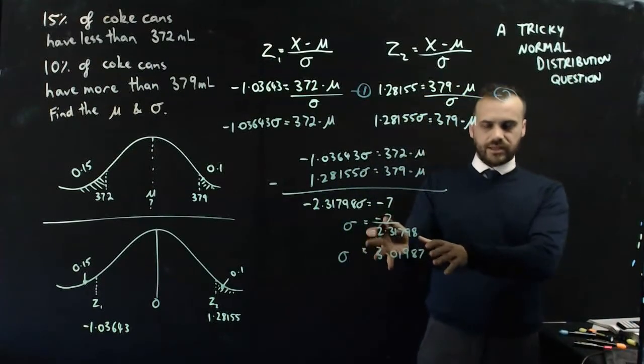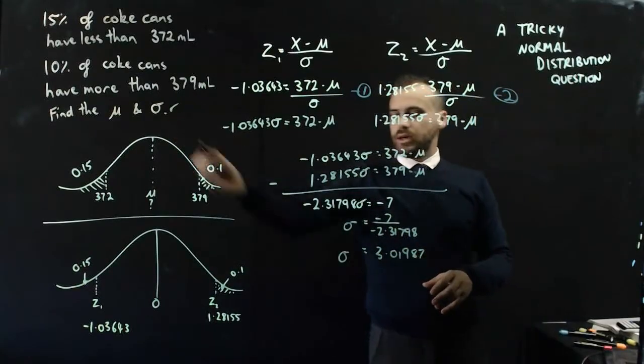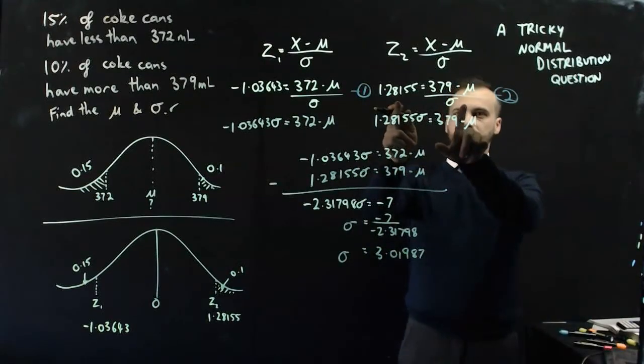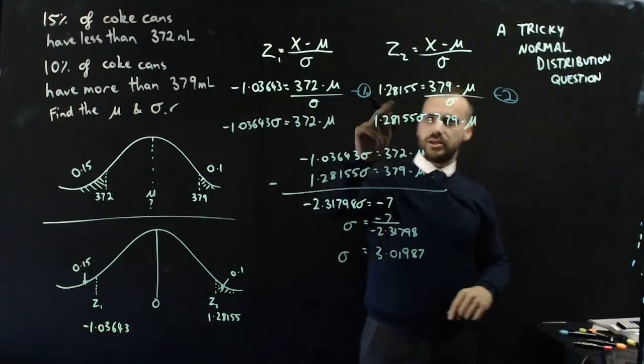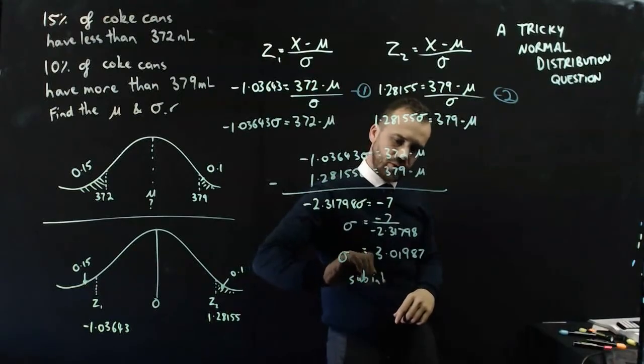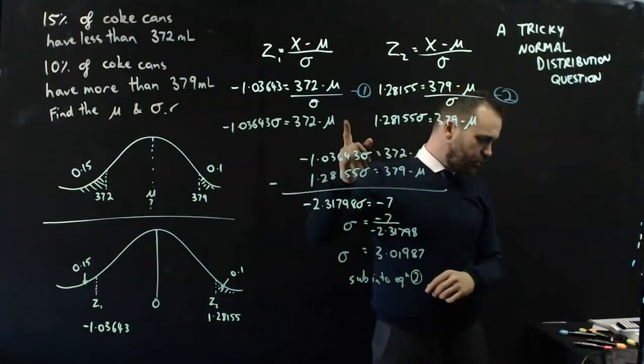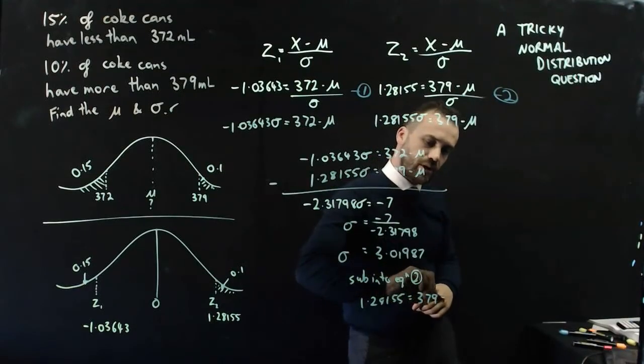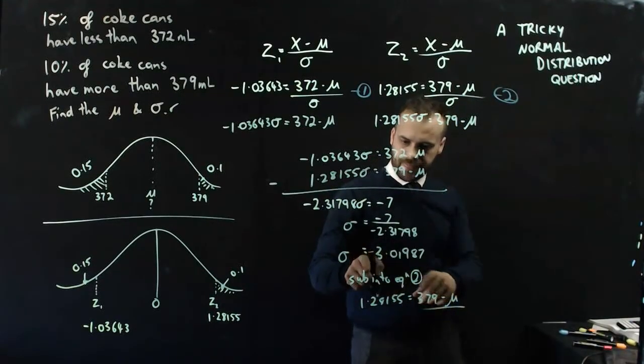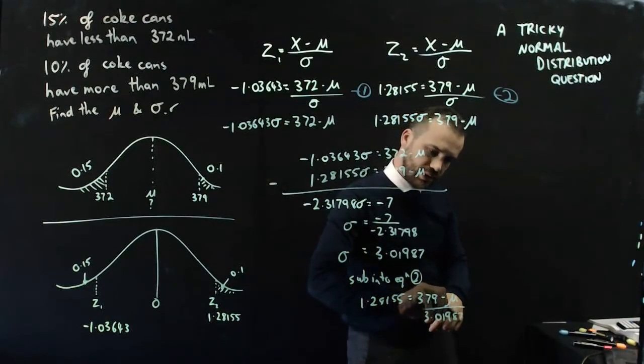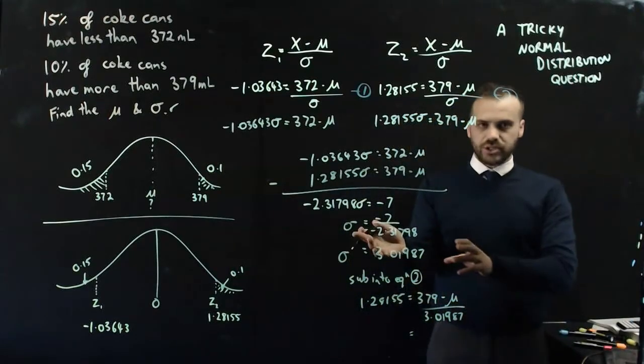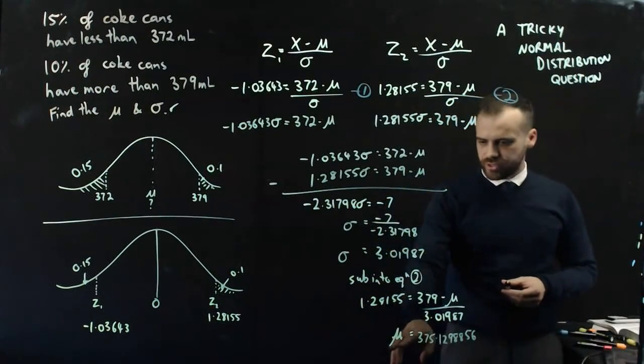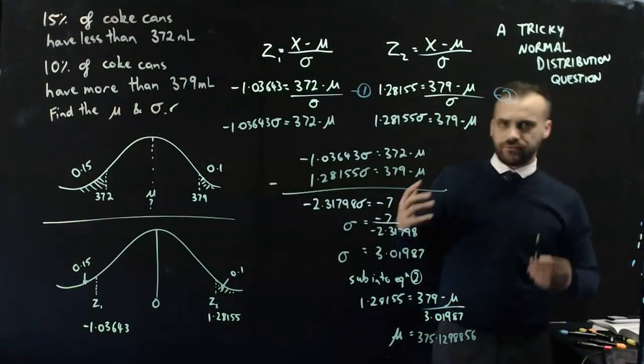Now I have a standard deviation. I'm half of the way there. I just need to know what the mean is. And I can do that by subbing that back into one of those equations. I'll sub it into that equation there. So that will be 1.28155 equals 379 minus the mean divided by 3.01987. And just rearranging that, we find that the mean is 375.13.